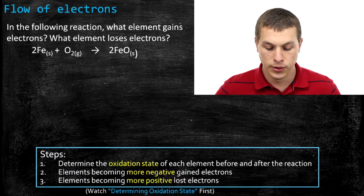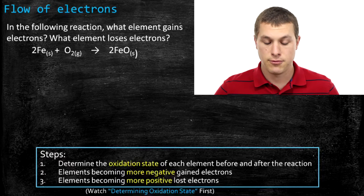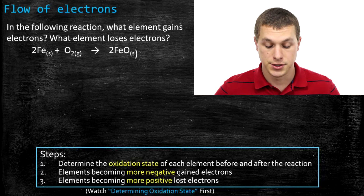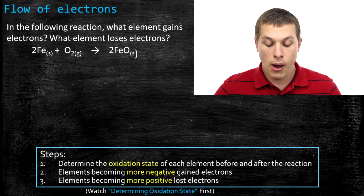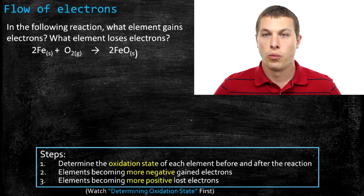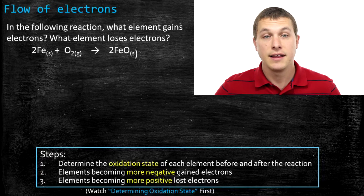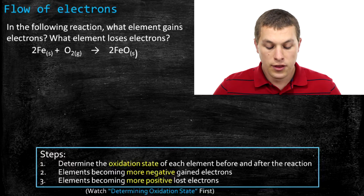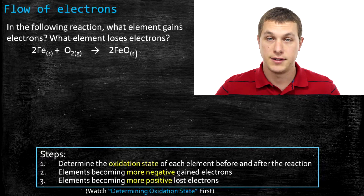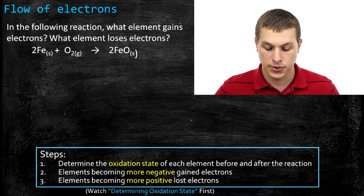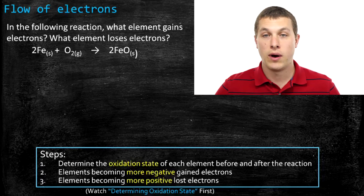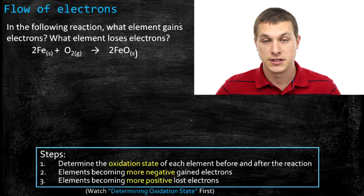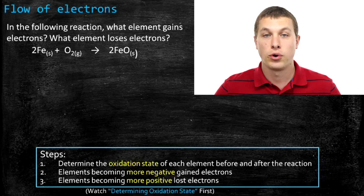The very first thing we're going to do is take a look at the same reaction: combining iron with oxygen to make iron oxide. What we want to think about is what element in this reaction gains electrons and what element loses electrons. The way we're going to do this is by looking at the oxidation state of iron and oxygen both before and after the reaction. It's important that you know how to determine the oxidation state of elements — if you don't, I suggest you watch the 'Determining Oxidation States' video before continuing.